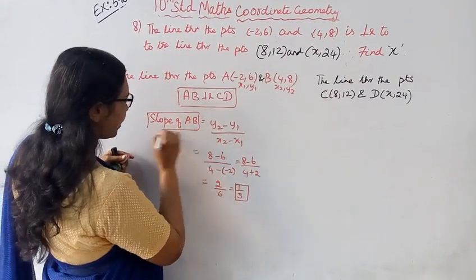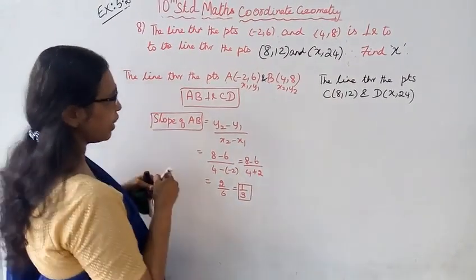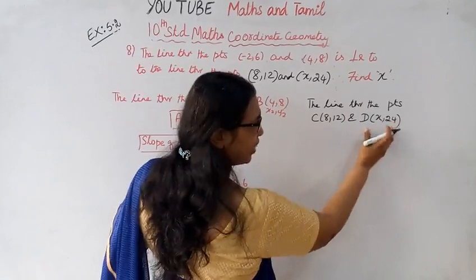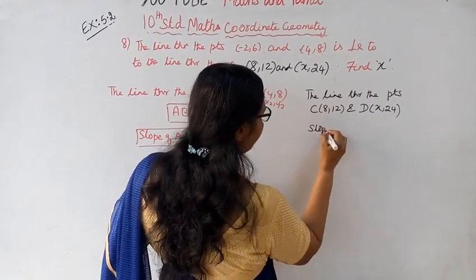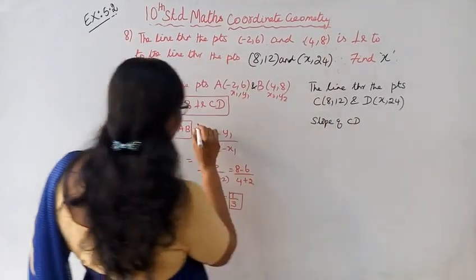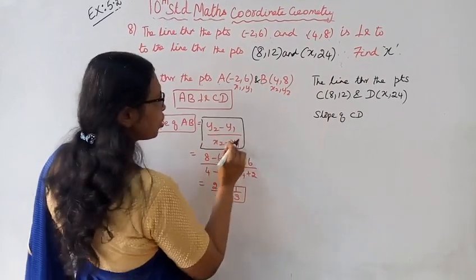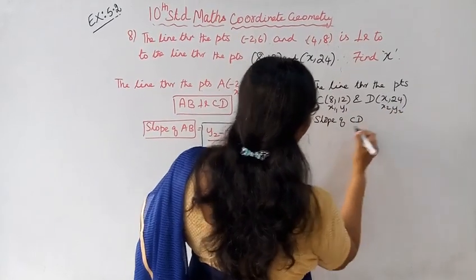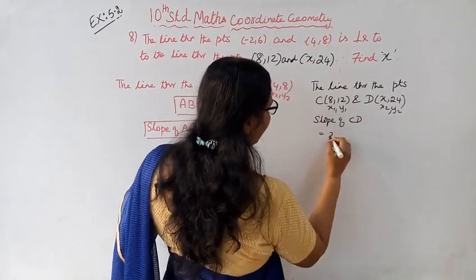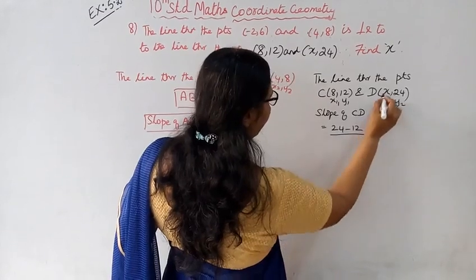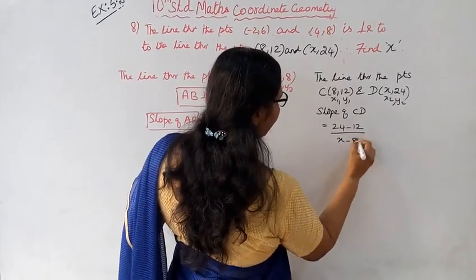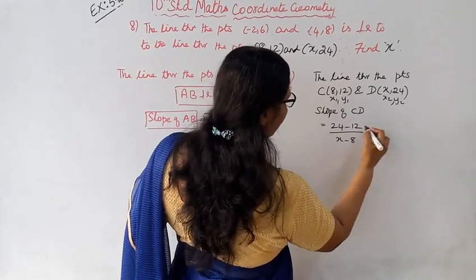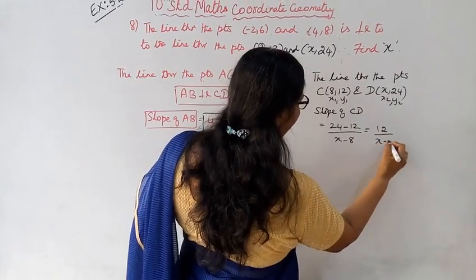Slope of AB is 1/3. Now for the line through points C and D, we find the slope of CD. Using y2 minus y1 by x2 minus x1, where C is (8, 12) as (x1, y1) and D is (x, 24) as (x2, y2). That gives 24 minus 12 divided by x minus 8, which is 12 divided by (x minus 8).